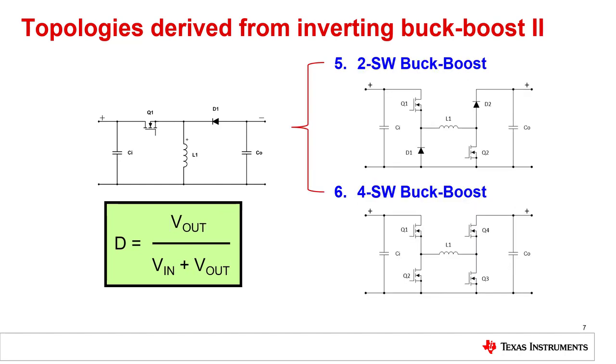Let me show you two more non-inverting buck-boost topologies: the so-called 2-switch buck-boost or 4-switch buck-boost. The difference between these two is the 2-switch buck-boost is using two main power switches and the rectifiers are diodes. For the 4-switch buck-boost all four power switches are transistors.